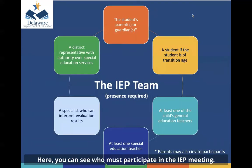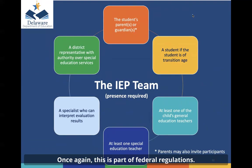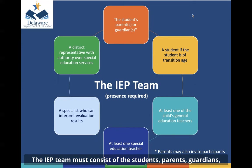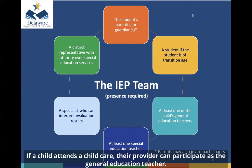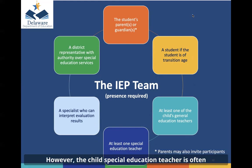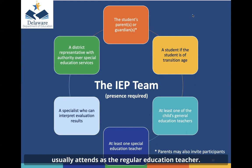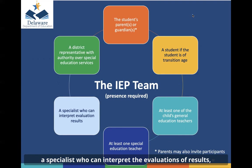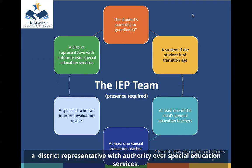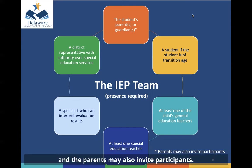Here you can see who must participate in the IEP meeting. The school district is responsible for scheduling this meeting, and this is part of federal regulations. The IEP team must consist of the student's parents or guardians, a student if they're 14 years or older, at least one general education teacher — if a child attends child care, their provider can participate in this role — at least one special education teacher, a specialist who can interpret evaluation results, a district representative with authority over special education services, and any additional participants the parents choose to invite.